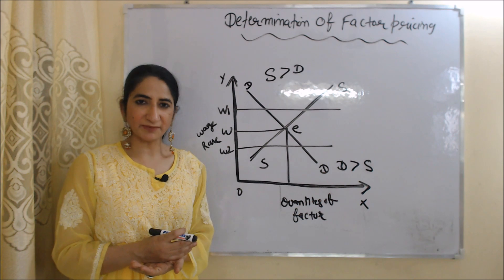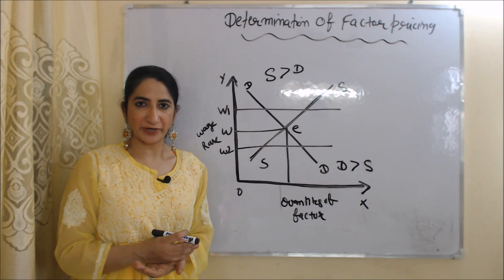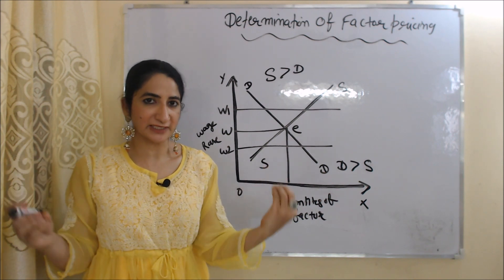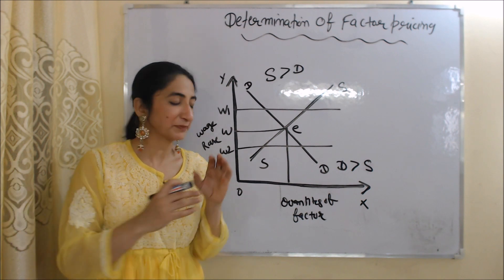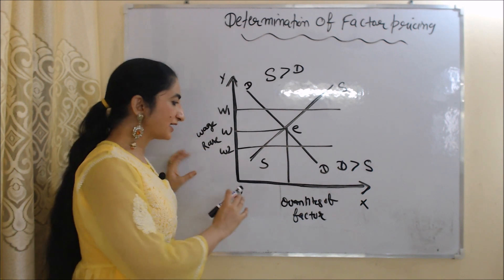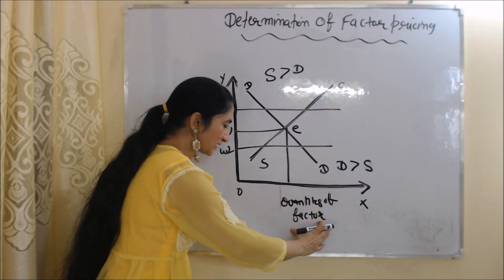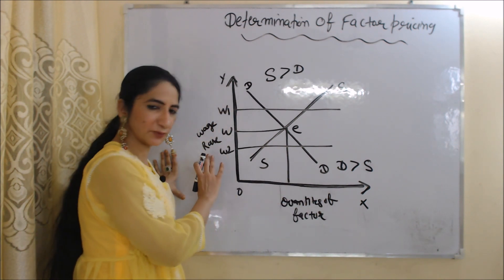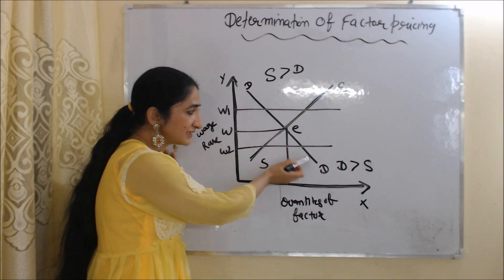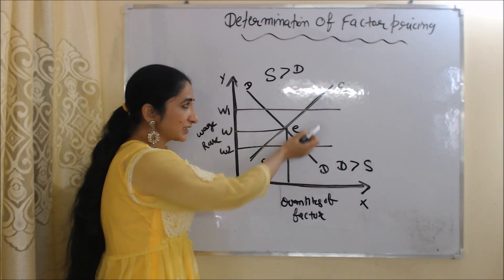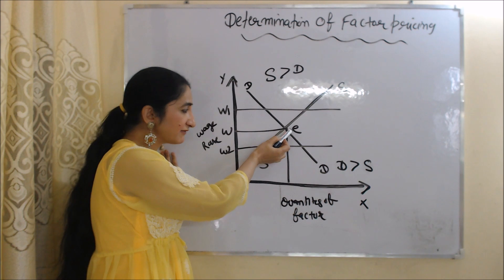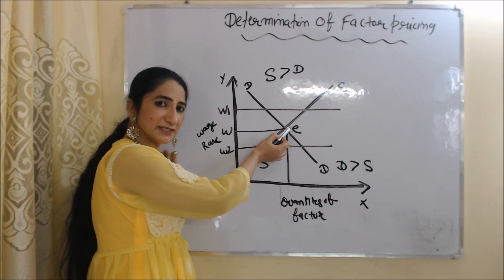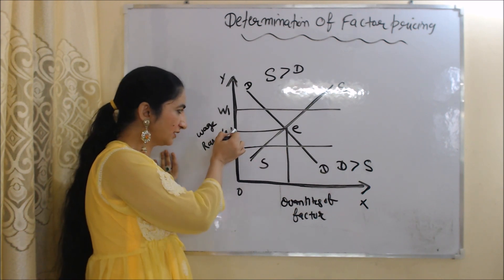Now we are going to talk about the determination of factor pricing. According to this theory, factor price is determined by demand and supply. In this diagram, on the x-axis we have quantity of factor, and on the y-axis we have wage rate. DD is the industry demand curve and SS is the industry supply curve. E is the equilibrium point, where industry demand equals industry supply, and the equilibrium wage rate is OW.